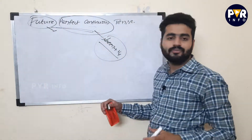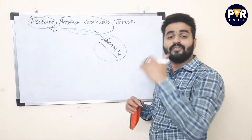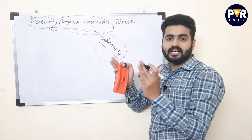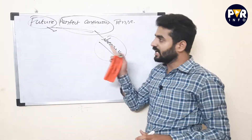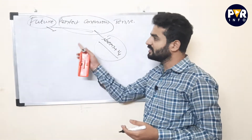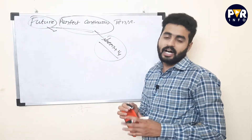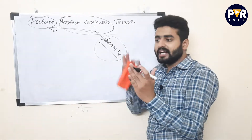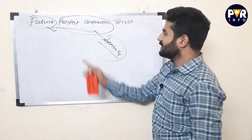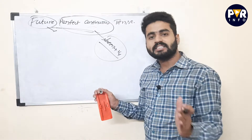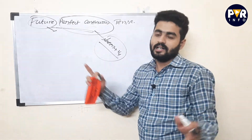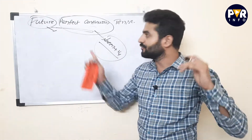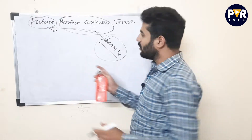What is the meaning of future perfect continuous? It will start in future — we know the starting time but we don't know the ending time. If you know both the starting and ending time in future, that is future perfect. But if we know only the starting time and don't know the ending time in future, that is future perfect continuous.